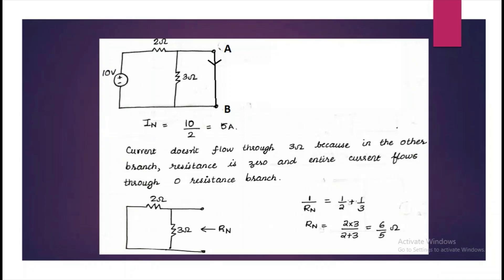Here 2 ohm is parallel with 3 ohm. So the net resistance is 6 by 5 ohm.